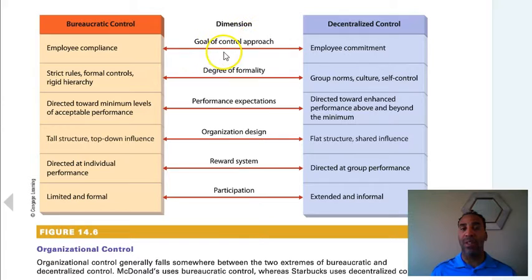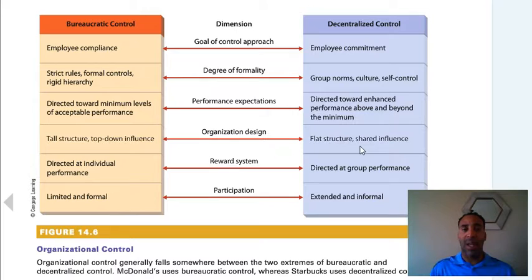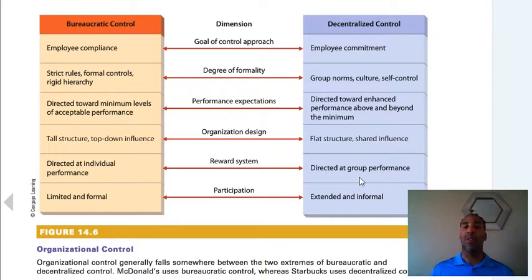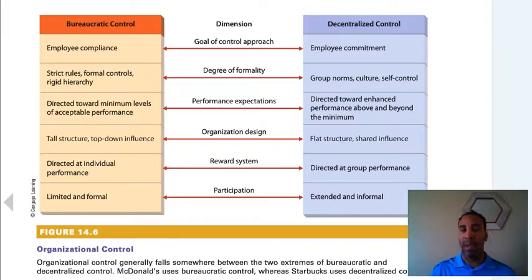The dimension here is degree of formality — bureaucratic is very formal; decentralized less so. Organizational design: flat means fewer levels; tall means it goes up like a pyramid and is very bureaucratic — you have to ask all the way up to the top. Different reward systems: bureaucratic is directed at individual performance; decentralized is directed at the group. I remember having a customer service team where individual results were on a big board — I erased those and put only the group results up. Everybody support the group; I'll deal with individuals who are falling short privately.